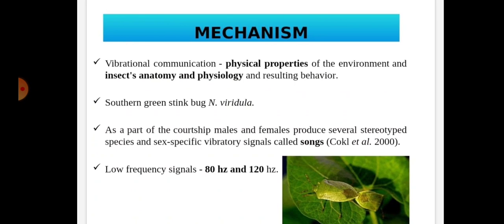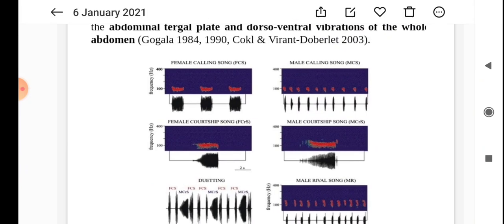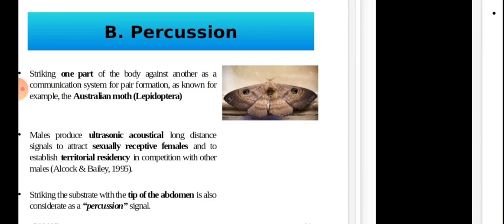Vibrational communication in ants occurs in a variety of contexts, often as part of multimodal signal or as a modulatory signal. The effects can depend on the social context where the signals are perceived. It plays a role in underground alarm communication, recruitment to food sources, and communication between castes in the context of defense against parasites. As part of courtship, males and females produce several stereotyped species and sex-specific vibratory signals called songs. They have very low frequency signals, 80 hertz to 120 hertz. Production of these signals is accompanied by movement of the abdominal tergal plate and dorso-ventral vibrations of the whole abdomen.